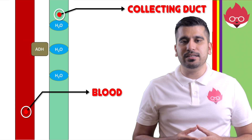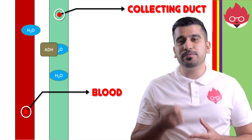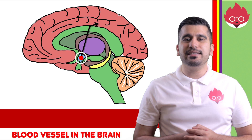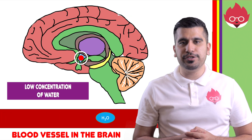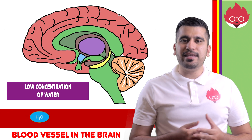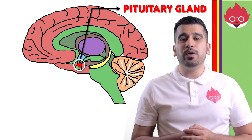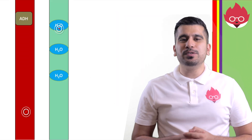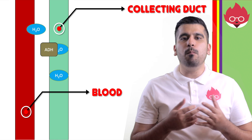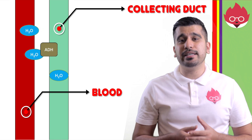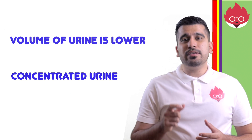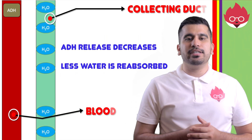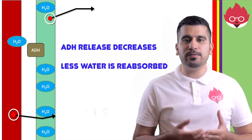Water moves out of the collecting ducts via osmosis. The permeability of the walls of the collecting duct can be altered depending on the need to reabsorb more or less water. Receptors in the hypothalamus detect changes in water concentration in the blood. If water levels are low in the blood, they send signals to the pituitary gland to secrete a hormone called ADH, which stands for anti-diuretic hormone. ADH travels in the blood towards the collecting duct, where it makes its walls more permeable to water, resulting in more water being reabsorbed into the blood. You end up with little and very concentrated urine. When water concentration is high in the blood, less water is reabsorbed, producing urine in greater volume, which is more dilute.